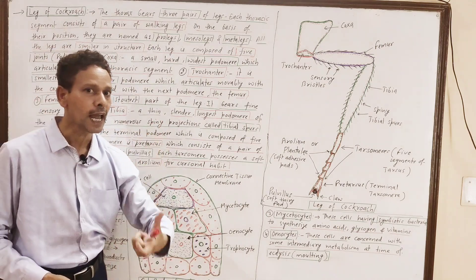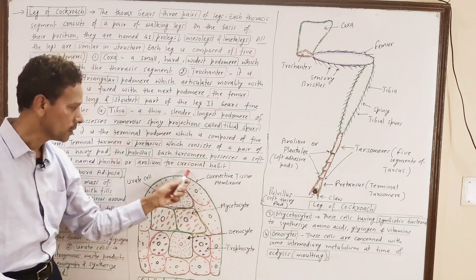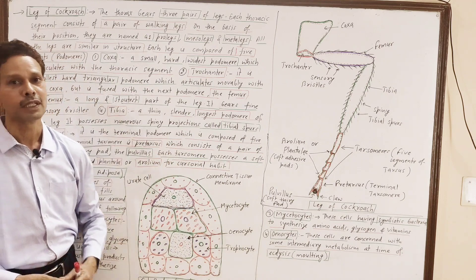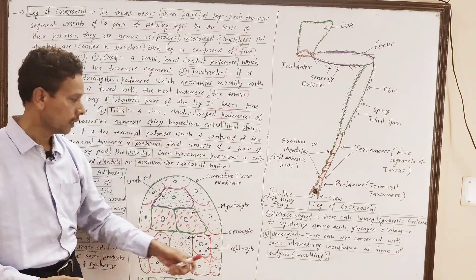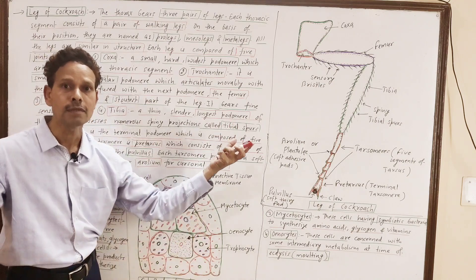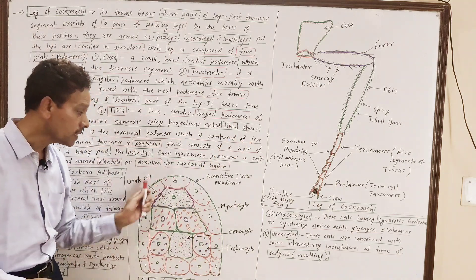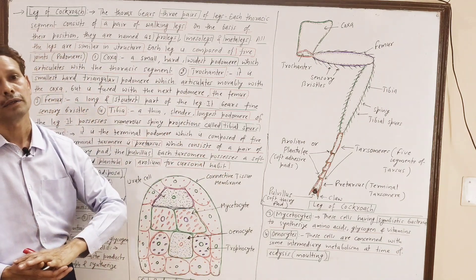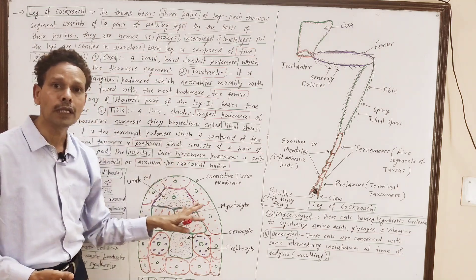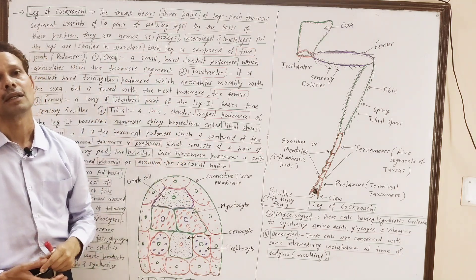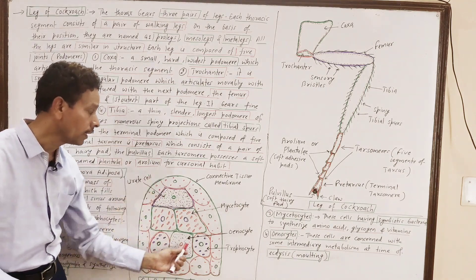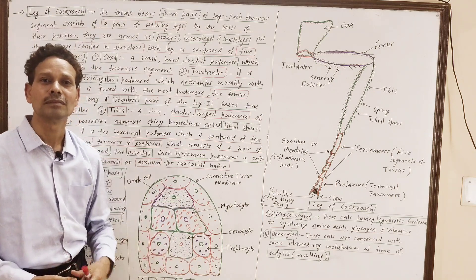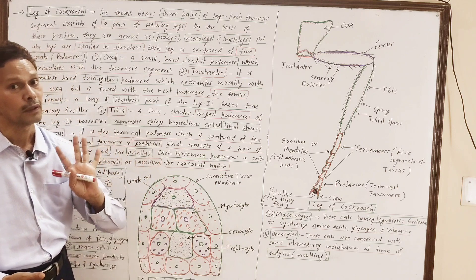The second important topic in today's lecture is fat body. This fat body, also called corpora adiposa, is very important for competitive exams. It is a whitish mass of connective tissue present all over the alimentary canal, in the perivisceral sinus cavity. This fat body consists of four types of cells.